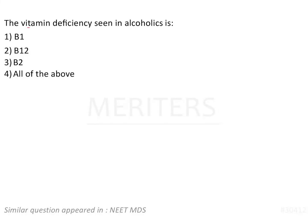The question is the vitamin deficiency seen in alcoholics. The options are B1, B12, and B2. B1 denotes thiamine deficiency, B12 stands for cobalamin deficiency, and B2 is riboflavin deficiency.